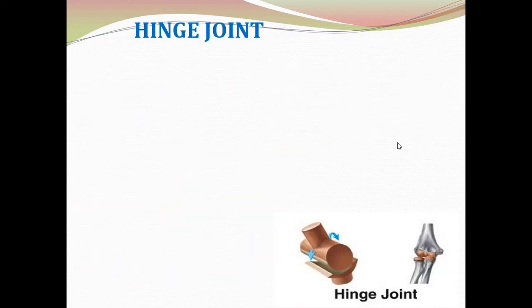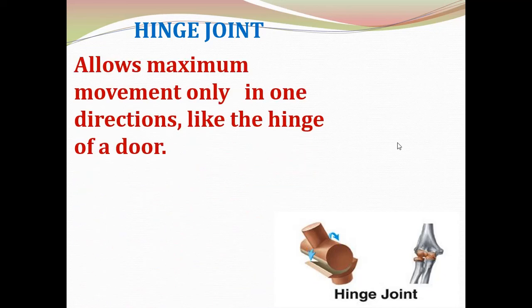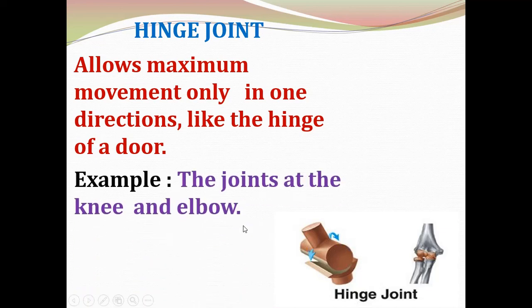Next is the hinge joint. It allows maximum movement only in one direction, like the hinge of a door. It does not allow movement in all directions, only in one direction. Examples of hinge joints are the joints at the knee and elbow.